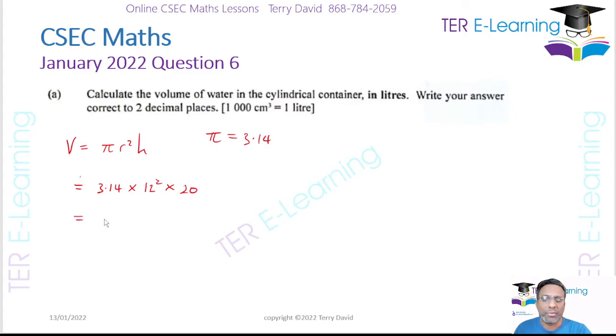So 3.14 by 12 squared by 20. Let me check that in the calculator. That's 3.14 multiplied by 144 multiplied by 20 and I'm going to get 9043.2, and this here is going to be cm³.